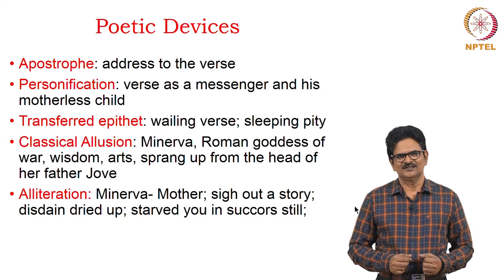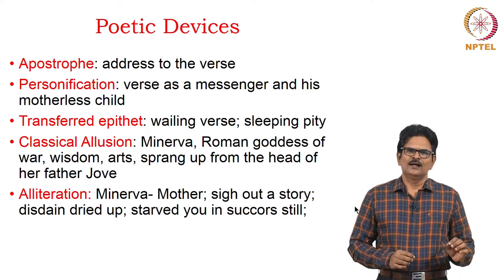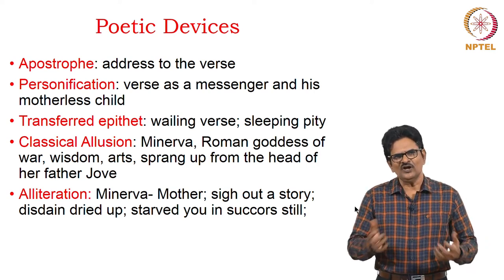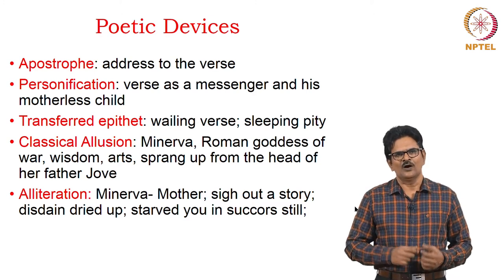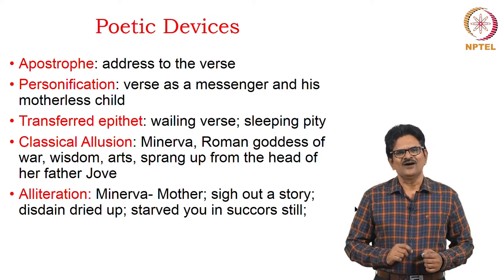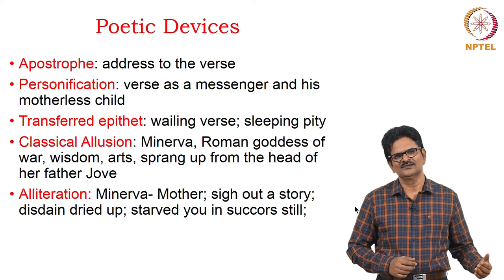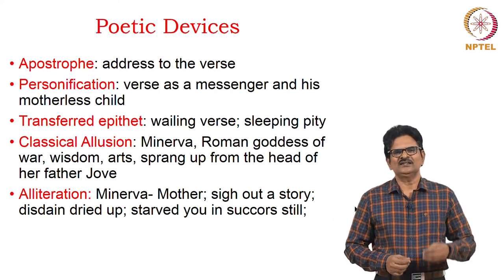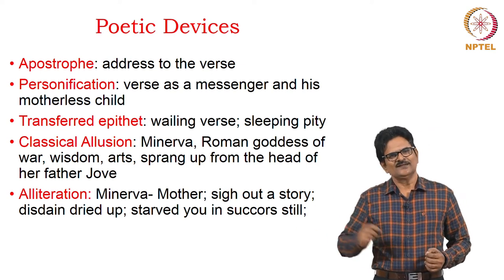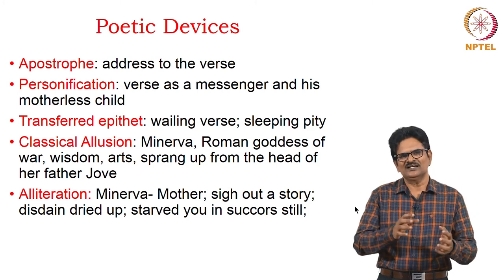There are some poetic devices in this poem. The first is apostrophe — the poet addresses his own verses as a messenger. Verse is also personified as a messenger and considered to be a motherless child whose father is the poet. We also notice transferred epithet in 'wailing verse' — it is the poet who wails and cries, but he attributes his own feeling of sorrow to the verses. Similarly, we find that the lady's pity is sleeping, and so he says it is pity that is sleeping rather than the lady.